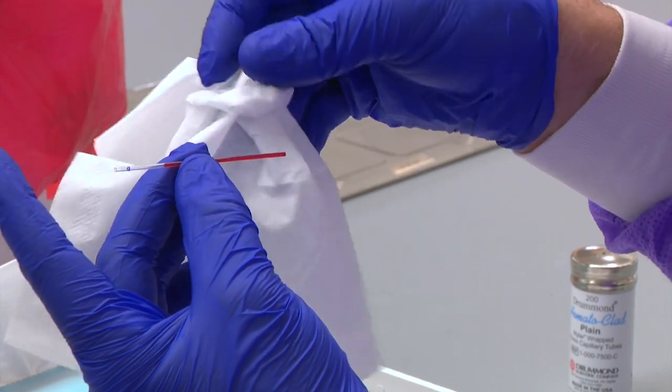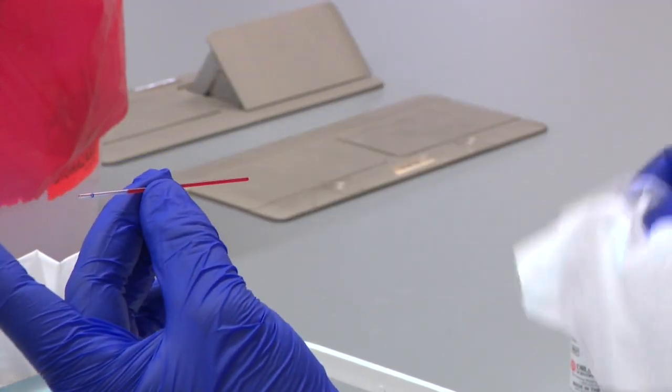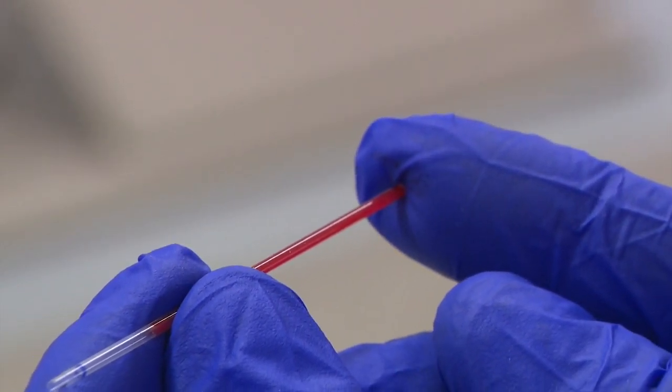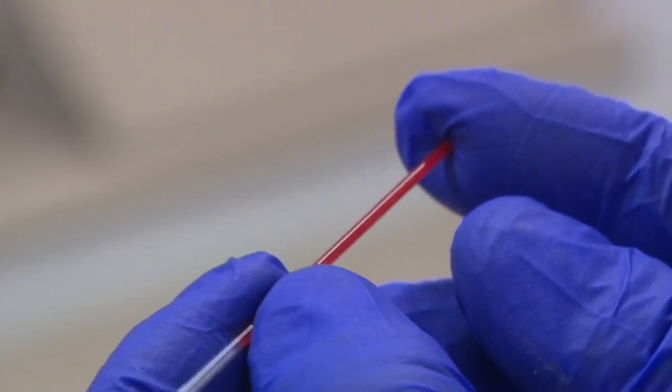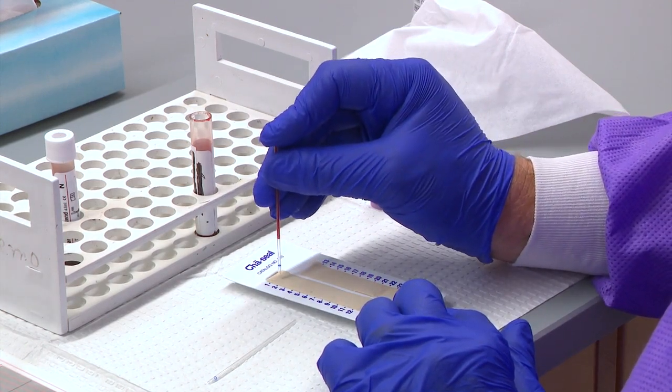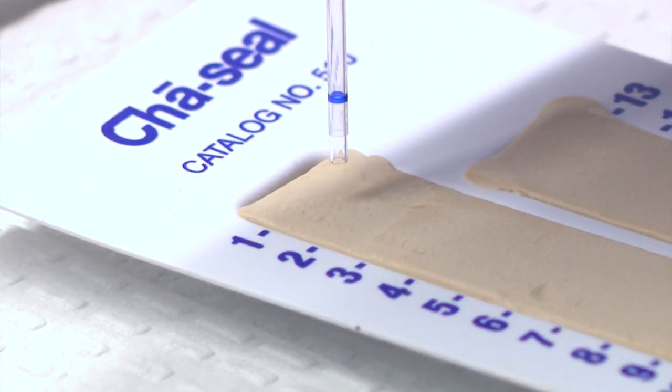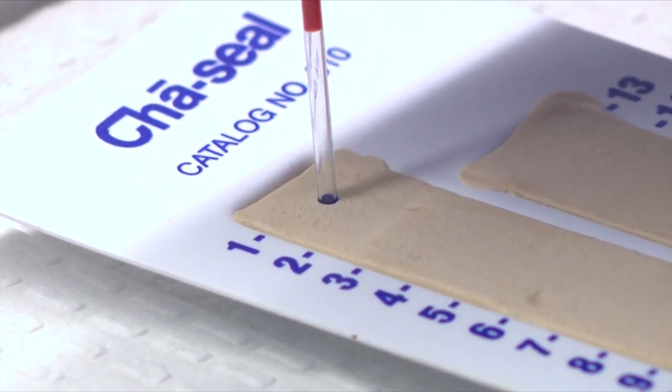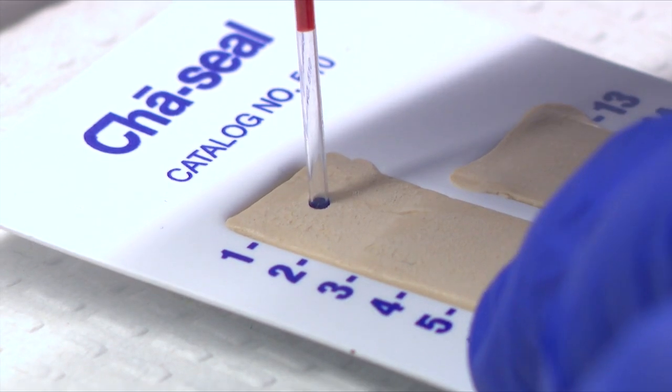Hold the micro hematocrit tube horizontally and wipe off the wet end with a Kleenex. Place your finger over the wet end of the tube. With your finger capping the wet end, rotate the tube vertically with the dry end down and push this end into the clay. Repeat this step a few times so there is a good amount of clay in the tube to plug the dry end.